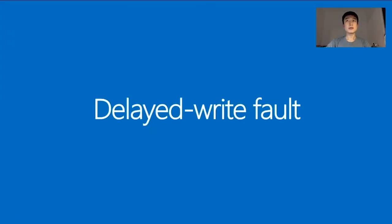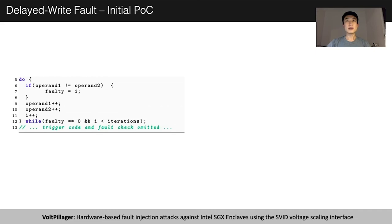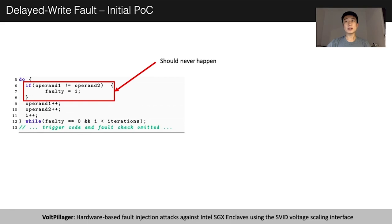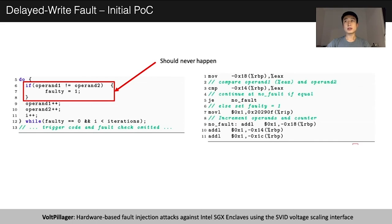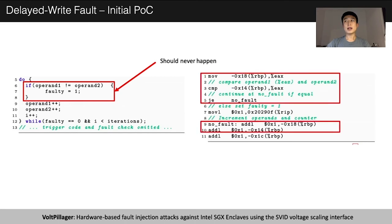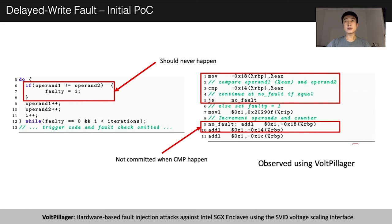Another new type of fault we found using the voltage glitcher is the delayed-write fault. In this code, we first set two variables off_cnt_1 and off_cnt_2 to the same value, then keep incrementing both and check if they still hold the same value. If calculation is correct, a fault condition should never be triggered. However, with fault injection, we found that sometimes the fault variable is set to 1. Looking at the disassembly, we believe one of the two INC instructions was not committed when the fault happens, so when execution reaches the comparison, the variables hold different values. This is a new type of fault observed using a voltage glitcher.